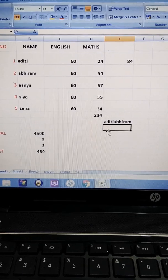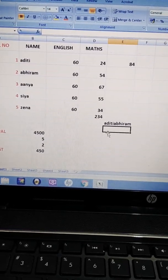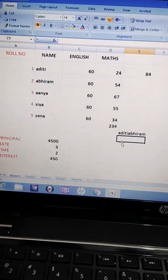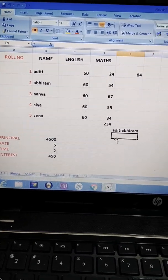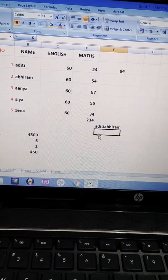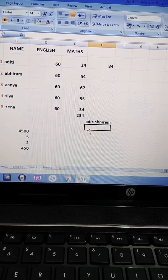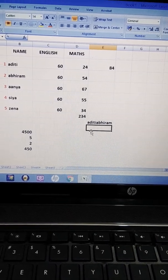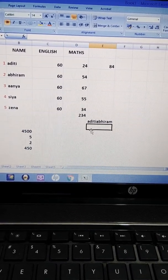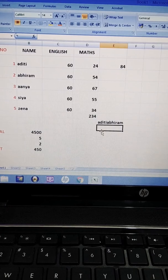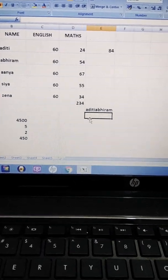So what it has done? It has concatenated two strings and two strings are there without any space, Aditi Abhiram. Like this you can do calculations on your strings also, on your text also. But one type of calculation only you can do and that is addition. They have given one example in your book: Kips and India. And when they have written Kips ampersand India, it will give you the result Kips India.